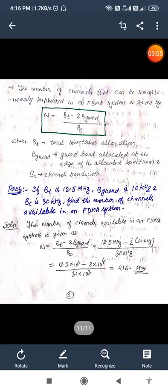now here one formula is very important to determine the number of channels that can be simultaneously supported in an FDMA system which is given by N equals BT minus 2 times Bguard upon BC. BT is the total spectrum allocation, Bguard is the guard band allocated at the edge of the allocated spectrum, and BC is the channel bandwidth.